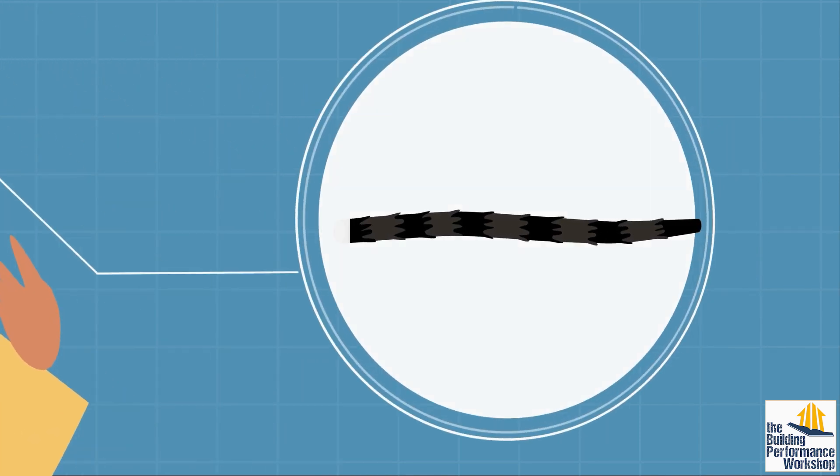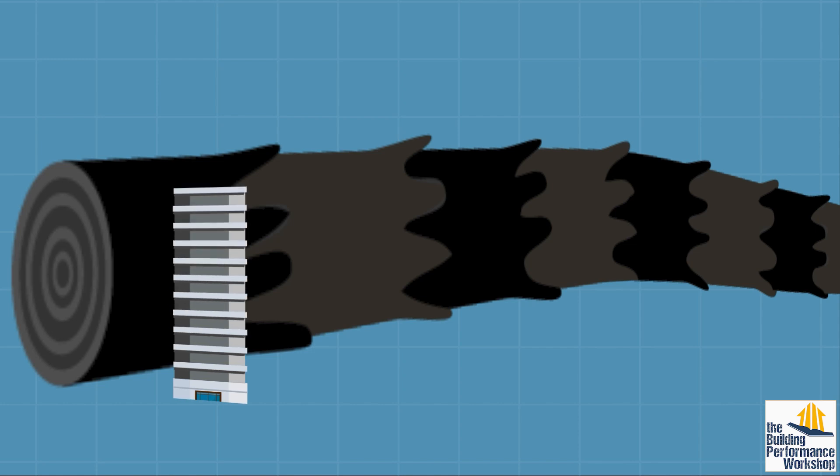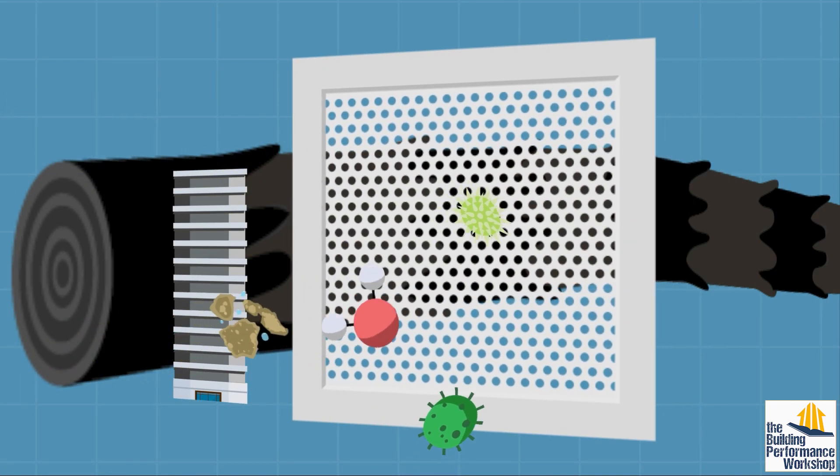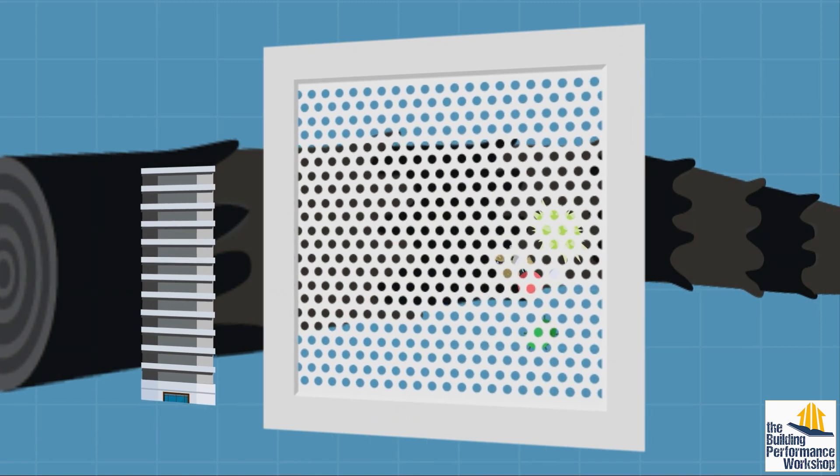If you took a single hair and blew it up into this human scale, it would be as thick as a 13-story apartment building. This giant, heavy chunk of tininess easily gets captured by any old air filter, even one you can see through.